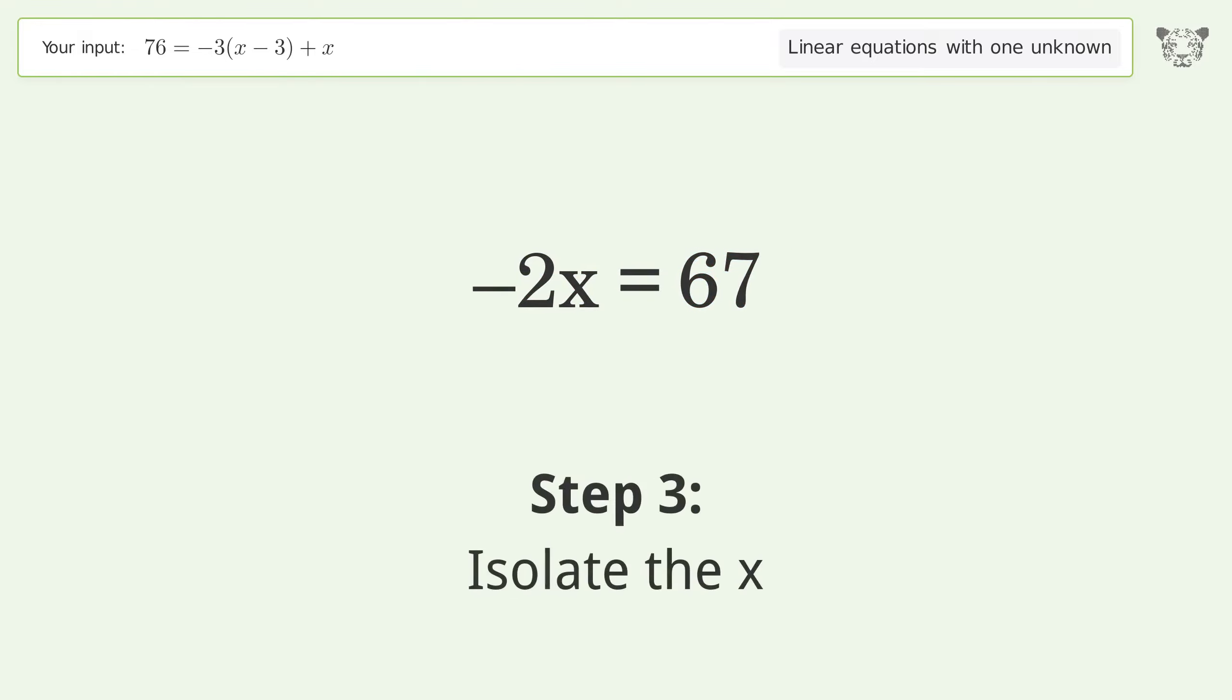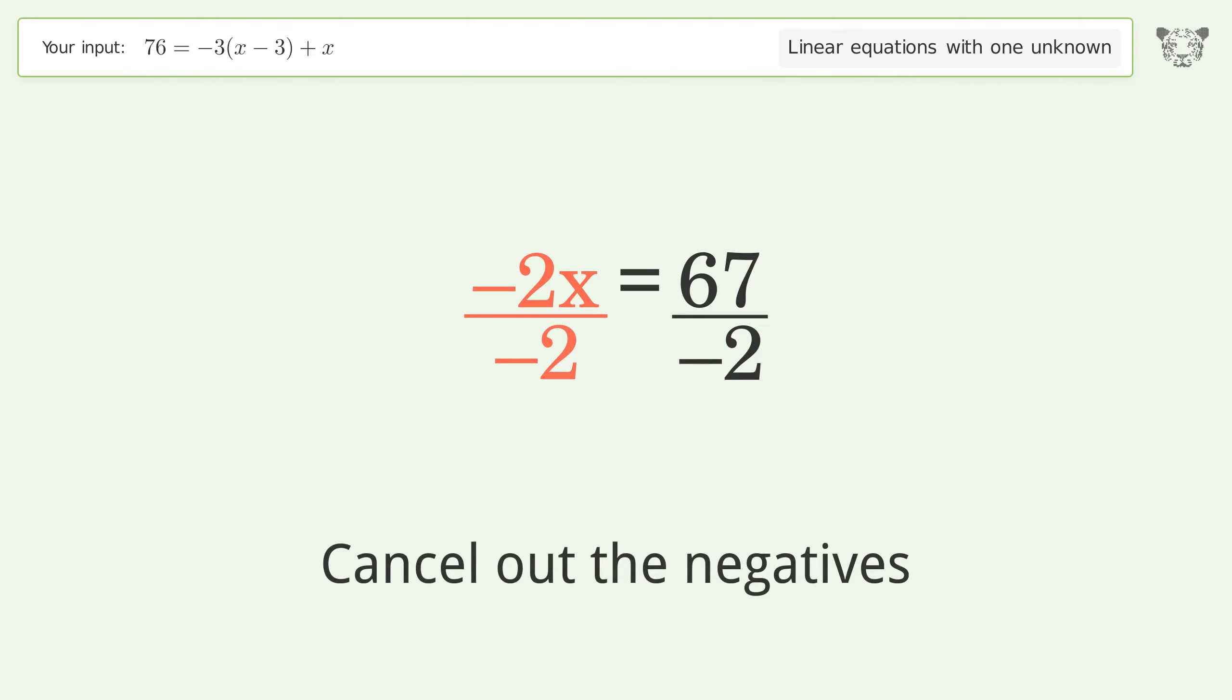Isolate the x. Divide both sides by negative 2. Cancel out the negatives.